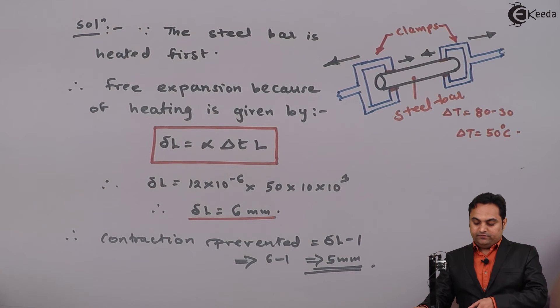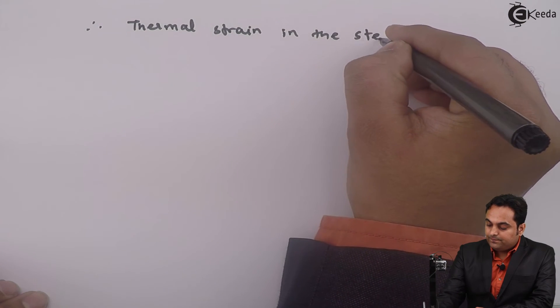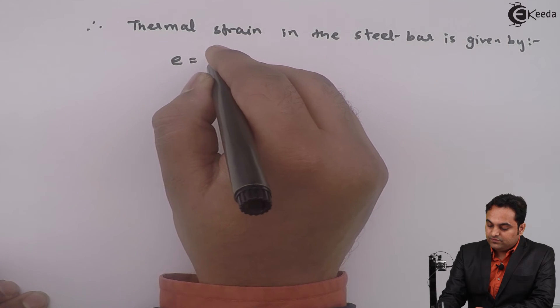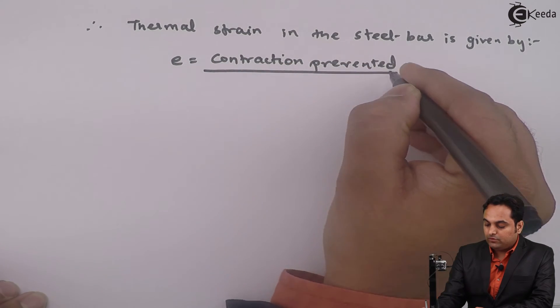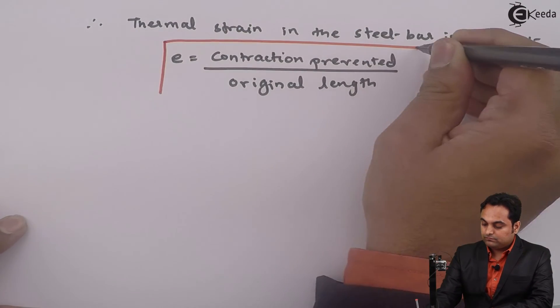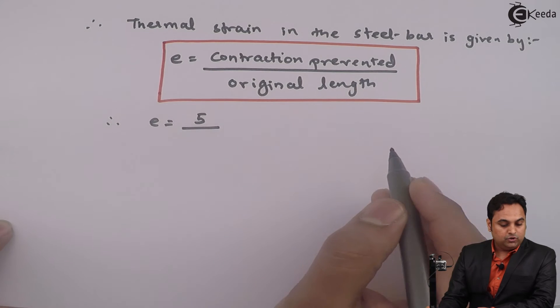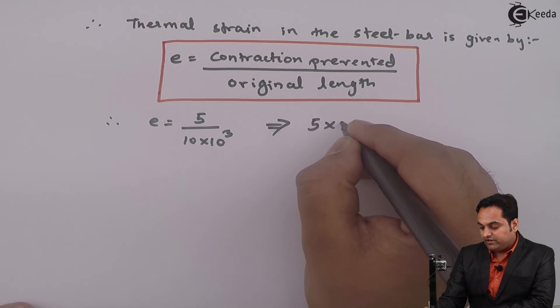After getting the contraction prevented, we can calculate the value of thermal strain. The thermal strain developed is tensile in nature. Thermal strain in the steel bar is given by the contraction prevented divided by the original length. The contraction prevented is 5 mm, and the original length is 10 into 10 raised to 3 mm, giving a thermal strain of 5 into 10 raised to minus 4.